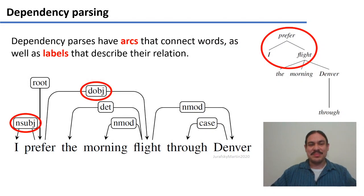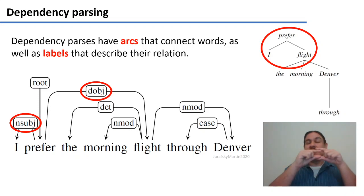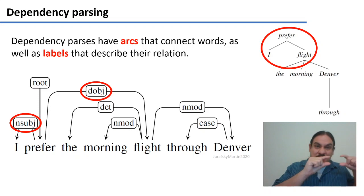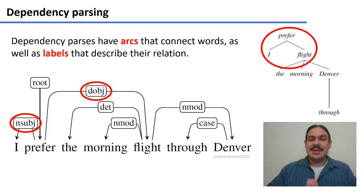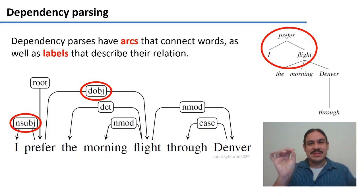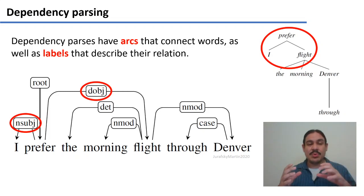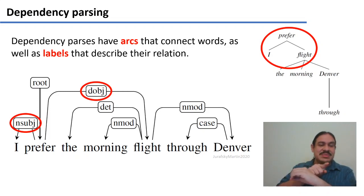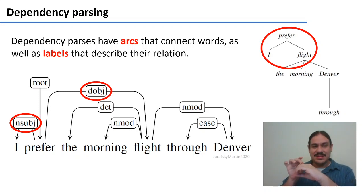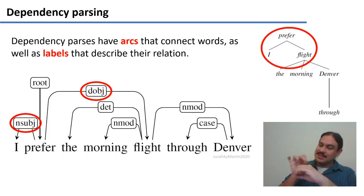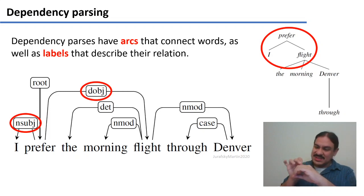From last time, we have been using a kind of parsing based on constituents, which had words grouped into noun phrases, verb phrases, prepositional phrases, and so forth. In dependency parsing, we focus not on the constituents but on the relationships between the words. For example, the word 'prefer' has a subject — the subject of the action prefer is 'I' — so we have an arc connecting the head 'prefer' to the dependent 'I'.